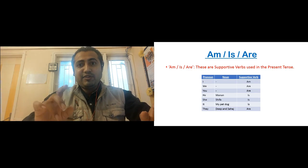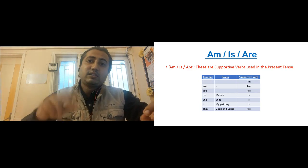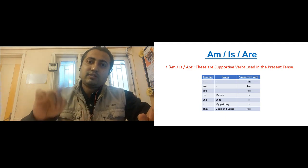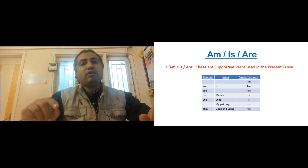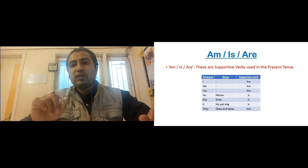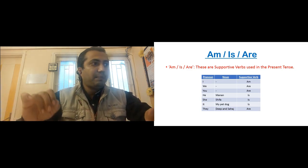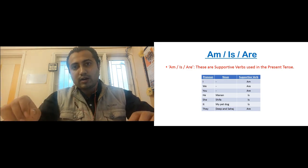Then they, if it is they, or name of more than one person. If they is the pronoun, or name of more than one person, then the supportive verb we will be using is are. That is, they are. Deep and Sahaj are.